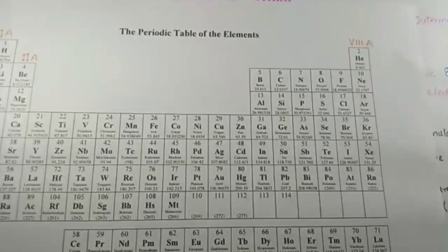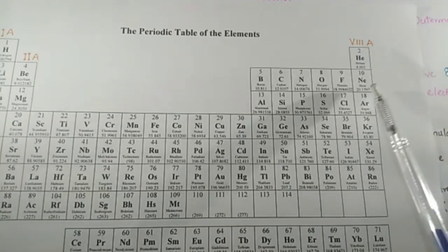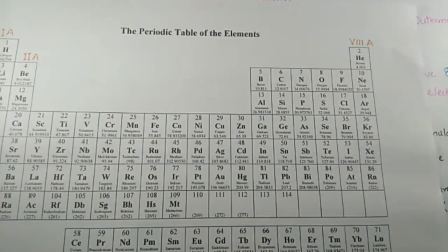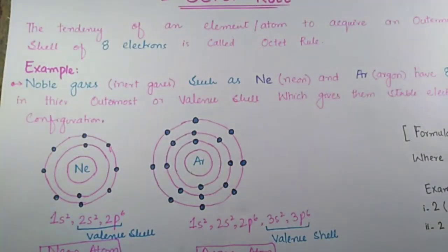For example, let's look at noble gases. Noble gases are actually the 8A group elements and they are very stable and less reactive. They are helium, neon, argon, krypton, xenon, and radon. Noble gases, specifically neon and argon, have eight electrons in their outermost or valence shell which gives them a very stable electronic configuration. Neon has two electrons in its innermost shell and eight electrons in its outermost shell.